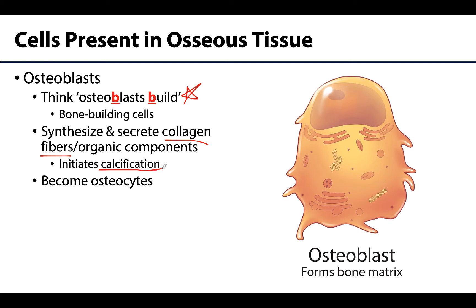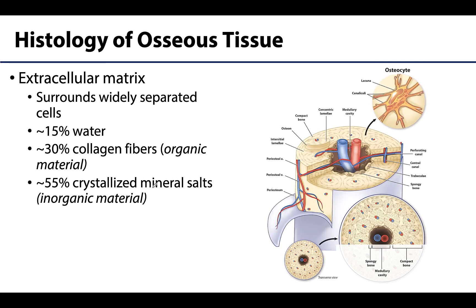Osteoblasts will continually secrete and surround themselves with these components of the extracellular matrix, eventually becoming essentially trapped in their own secretions. At the point that these cells are completely surrounded and trapped in extracellular matrix, there will be a stopping of secretion of the organic materials, and the osteoblasts will transition into an osteocyte. Before we move on to osteocytes, let's explore the extracellular matrix of bone.